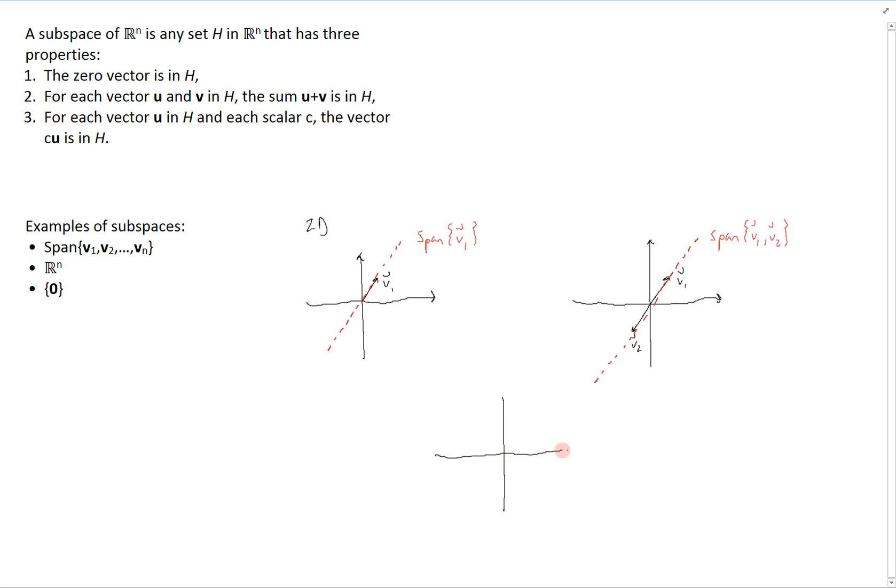As a third example, suppose that we have two vectors, v1 and v2, that are linearly independent. In that case, we know that the span of v1 and v2 is going to be all of R^2, since we're able to span the entire space by using two linearly independent vectors. And therefore, the span of v1 and v2 is a subspace of R^2, namely R^2 itself.